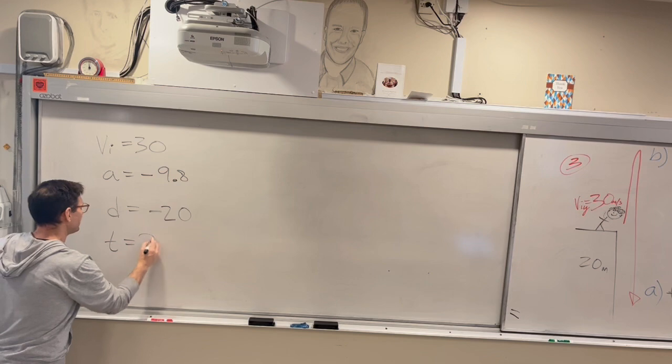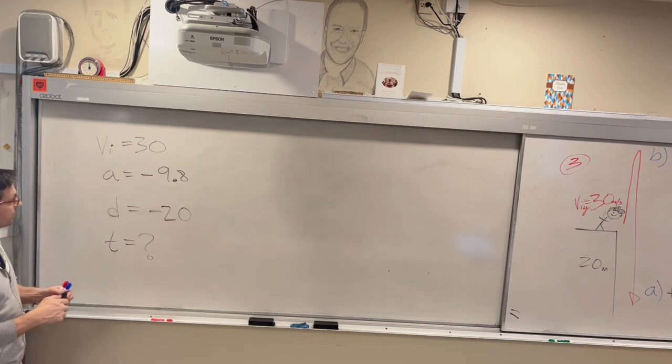Negative 20. So our displacement, even though we went up and did all this other stuff, our displacement is just negative 20. And we're looking for time, right?